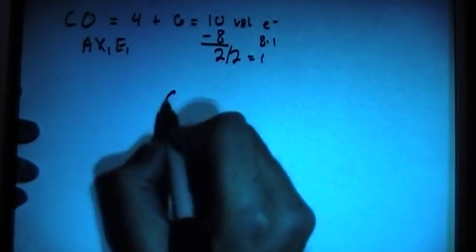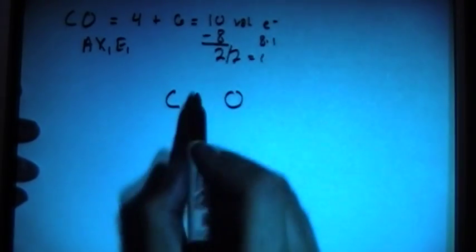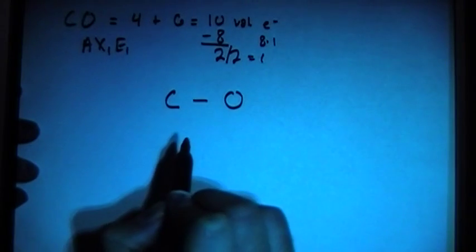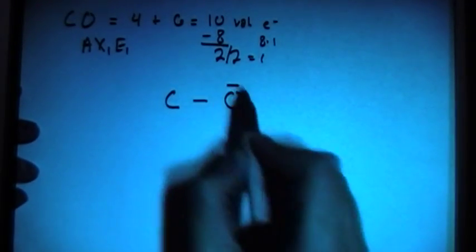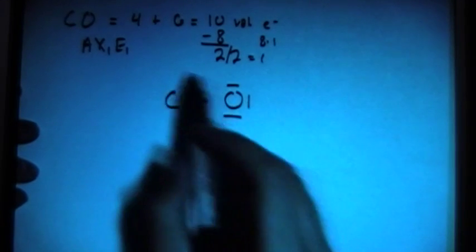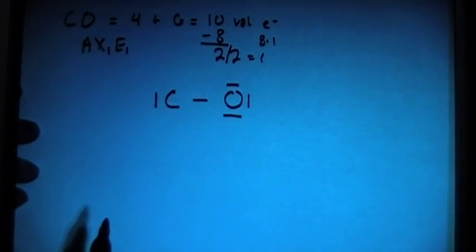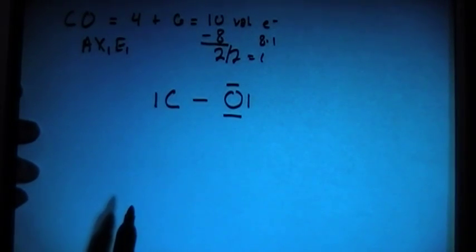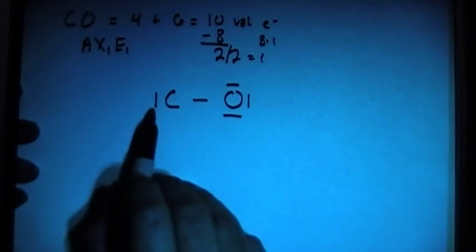So we draw carbon, oxygen. We can connect them with a single bond first. And let's say we just surround the oxygen with 6 more electrons. That gives us 8 total. And then put the very final electron pair on the carbon, and that gives us 10.